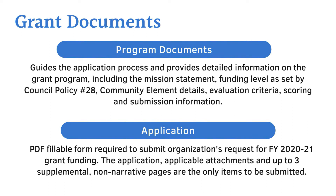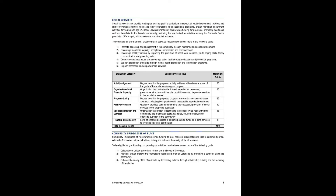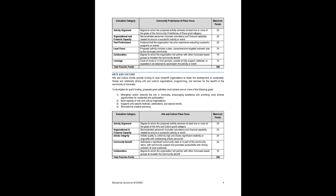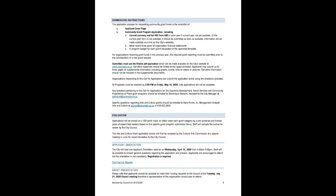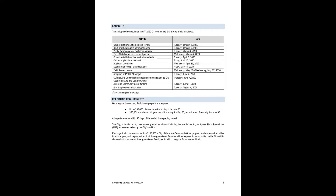Applicants are instructed to select one grant type. The program documents also outline each community element, the goals, evaluation criteria, and scoring. Submission instructions can be found on page five, and we will discuss in further detail later in the presentation. The final page includes a grant program schedule and required reporting information.